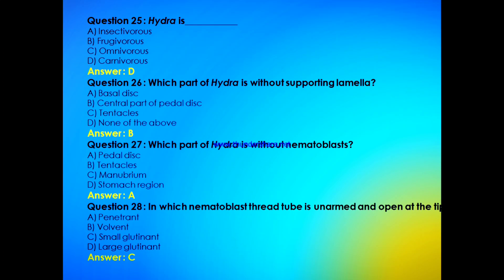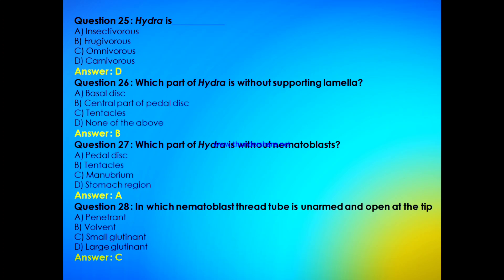Hydra is — insectivorous, frugivorous, omnivorous, or carnivorous? The answer is D, carnivorous. Which part of Hydra is without supporting lamella — basal disc, central part of pedal disc, tentacles, or none of the above? The answer is B, central part of pedal disc. Which part of Hydra is without nematoblasts — pedal disc, tentacles, manubrium, or stomach region? The answer is A, pedal disc.